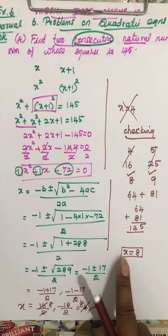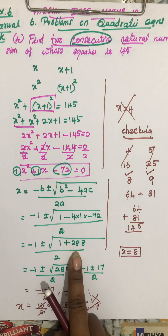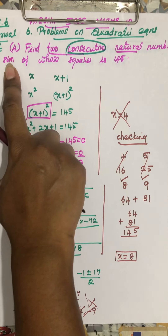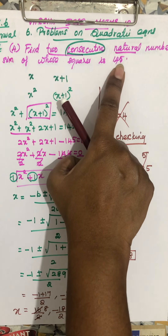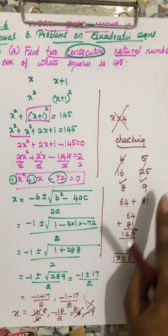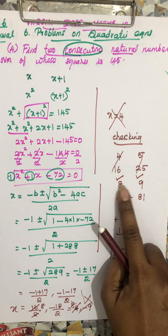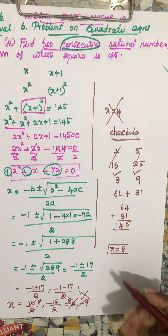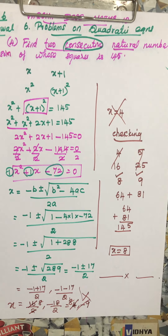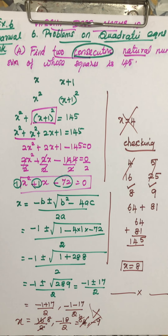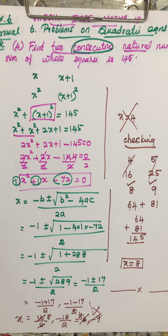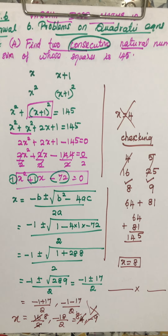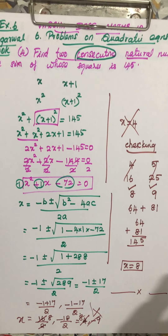I hope you all understand this sum — it's very easy. After solving, always check your answer. They gave us that the sum of squares is 145, so we took two consecutive numbers, squared them, and added to verify. You will definitely get full marks for this. Thank you, students.